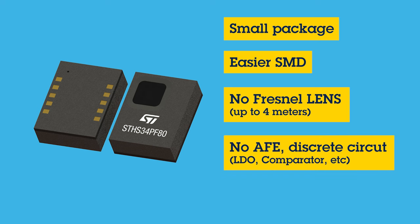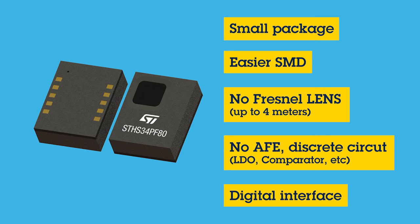Lastly, the TMOS IR sensor requires no discrete circuits. With a simple digital interface and dedicated embedded algorithms with interrupt capabilities, while the majority of PIR sensors require multiple discrete components with analog output.